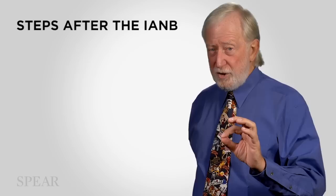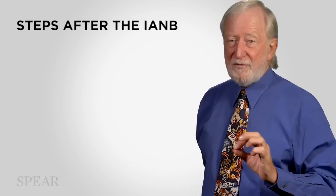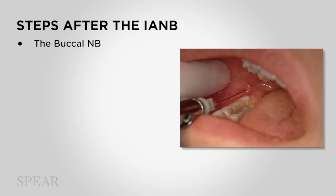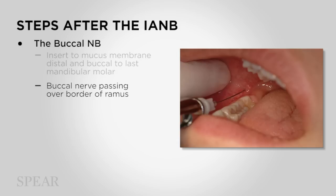It doesn't give you anesthesia of the soft tissue in the buccal fold that is distal to the mental foramen. So once we've finished doing the inferior alveolar nerve block, we pull the syringe out using the same syringe and same needle. We have a little bit of anesthetic left in the cartridge, and we insert the needle into the buccal fold, just distal and buccal to the last tooth in that quadrant, usually the second or third molar, and deposit the remaining content of the cartridge.